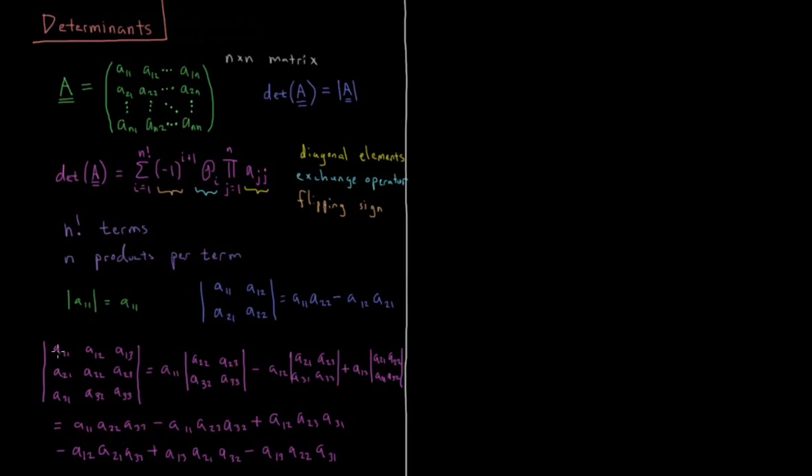For three by three, we start getting more complicated. As I said, for an n by n matrix, there's going to be n factorial terms that show up. So beyond three by three, this starts to get very complicated, very fast. And in each term, there are n products.